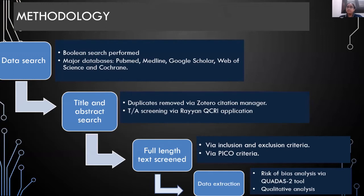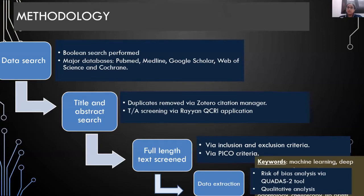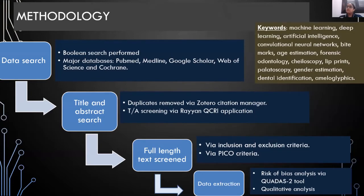The present review consisted of a Boolean search performed in the major databases of PubMed, Medline, Google Scholar, Web of Science, and Cochrane. The various keywords consisted of machine learning, deep learning, artificial intelligence, convolutional neural networks, and others as listed on screen.